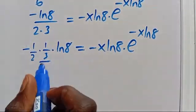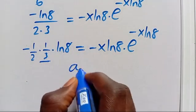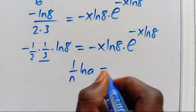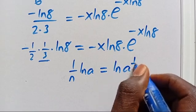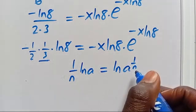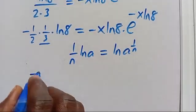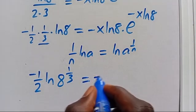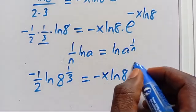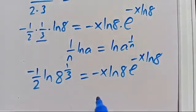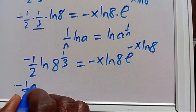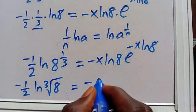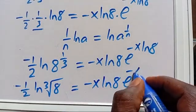We can take this back to the power, because when we have 1 over n multiplied by ln(a), this equals ln(a to the power of 1/n). Applying it here, we have minus 1 over 2 times ln(8 to the power of 1/3), which equals minus x times ln(8) times e to the power of minus x times ln(8). The cube root of 8 equals 2.